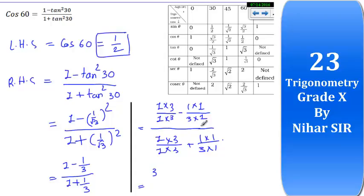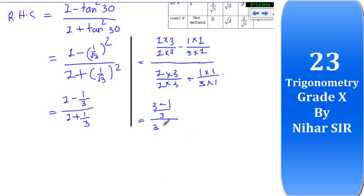It will be 1 upon, 3 minus 1 is 2. So it will be 2 upon 3 and 4 upon 3.